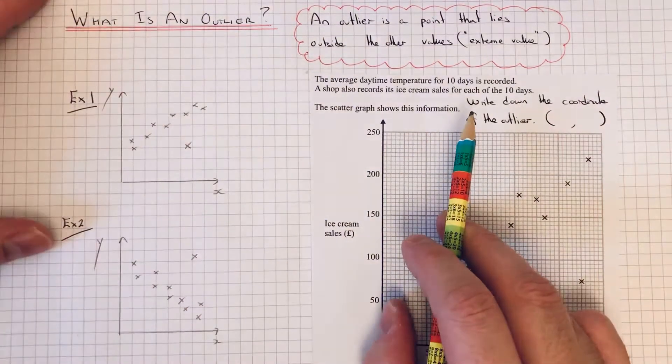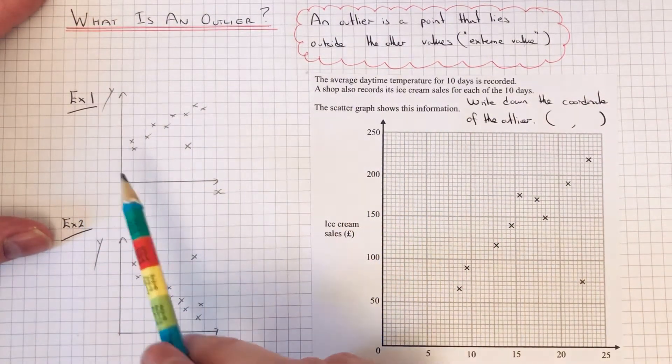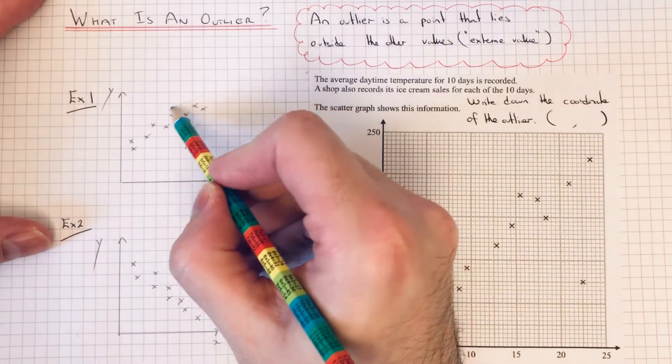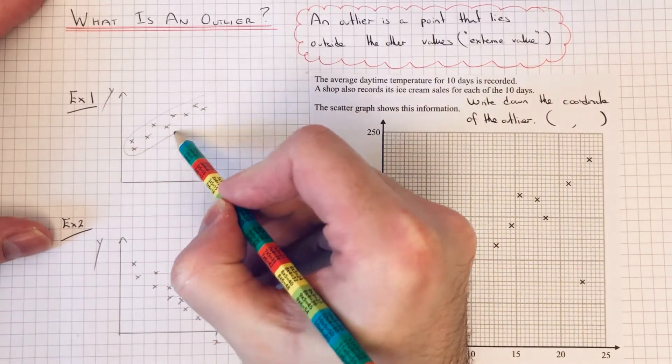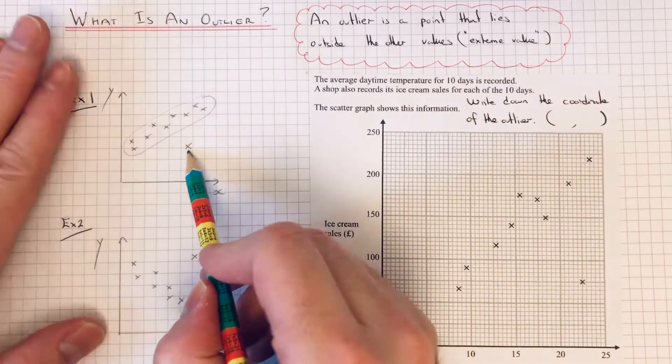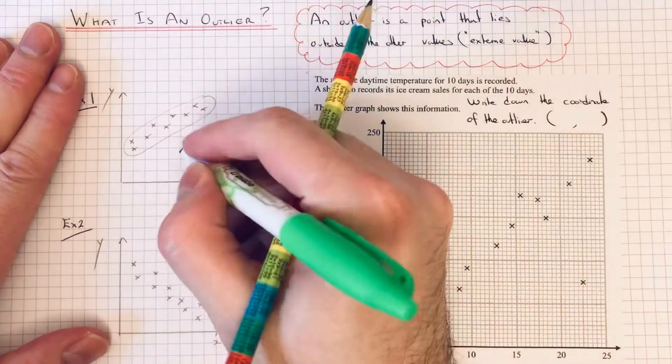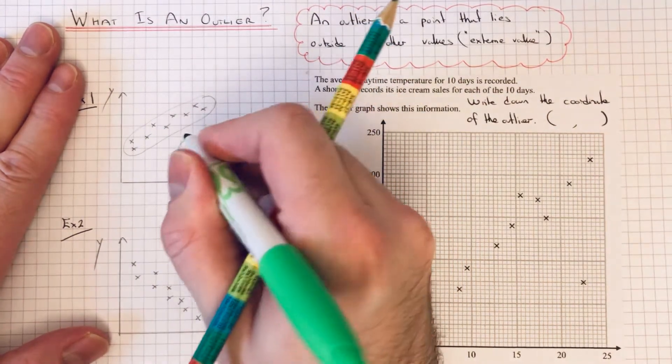Let's have a look at example one. We've got to identify the outlier. As you can see, most points on the scatter diagram are situated here. This point here is outside those other points. So it would be this one, which is the outlier.